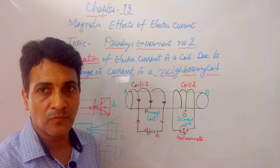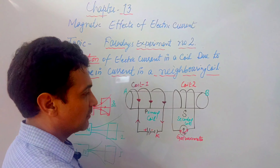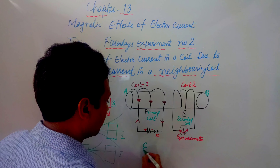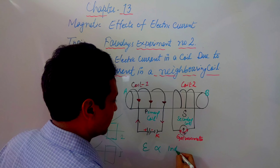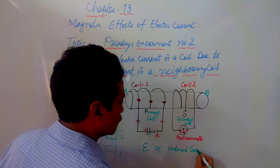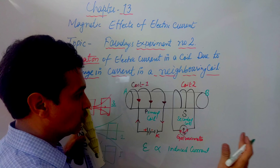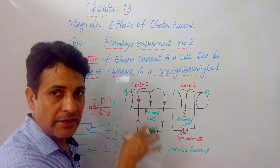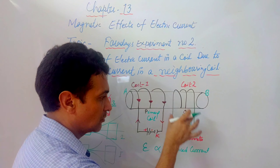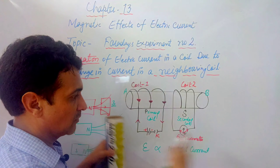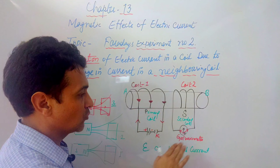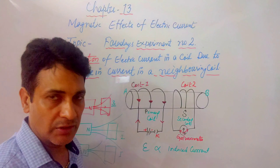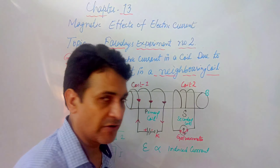When magnetic field lines pass to the neighboring coil, a potential difference is created, and then induced current will be produced. Induced EMF is directly proportional to induced current. Induced current is produced due to relative motion of the coils — one coil carrying current and the second coil connected to the galvanometer. That very minute current produced is known as induced current.